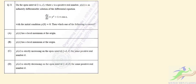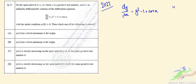Hello, so this is from IIT JAM 2022 mathematics paper, question 21. On the open interval from minus c to c, where c is a positive real number, y(x) is an infinitely differentiable solution of the differential equation dy/dx = y² minus 1 plus cos(x), with initial condition y(0) = 0. So then which of the following is correct?